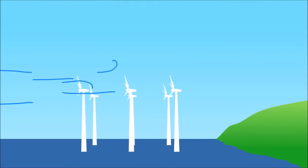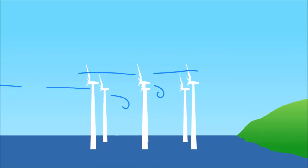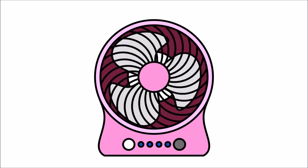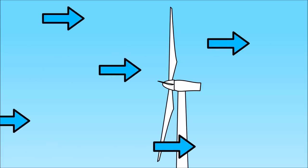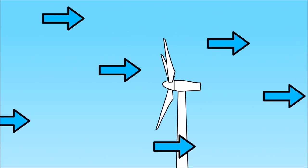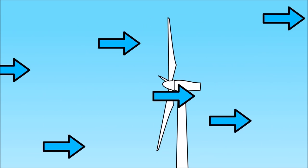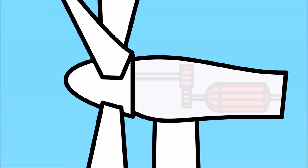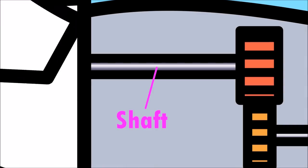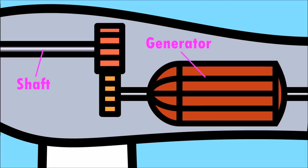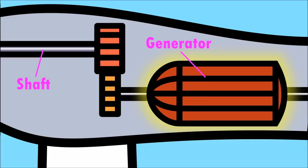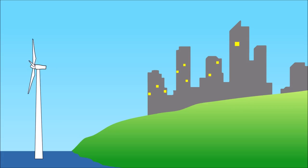Wind turbines use the wind to make electricity. Unlike fans that use their blades to push the air, the wind pushes the air and spins the blades of the wind turbines. When the blades turn, this causes the shaft inside the turbine to rotate. The shaft is connected to the generator, making it spin. The spinning generator creates lots of electricity, capable of powering thousands of homes.